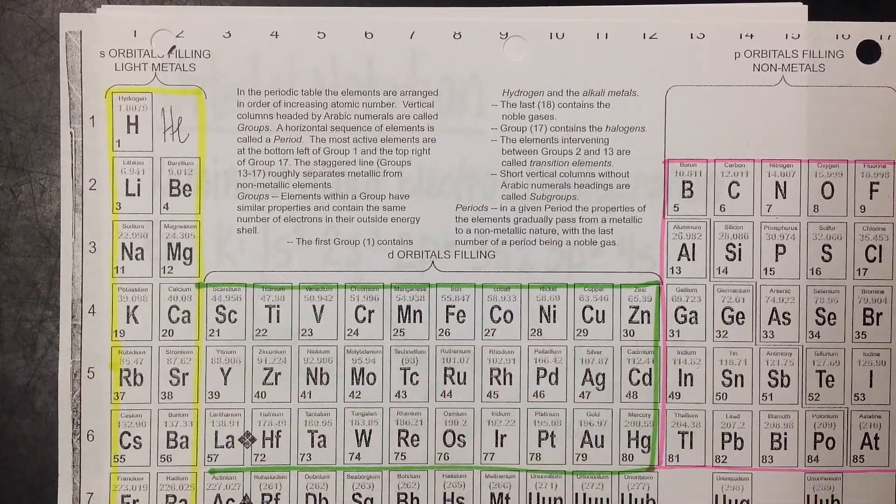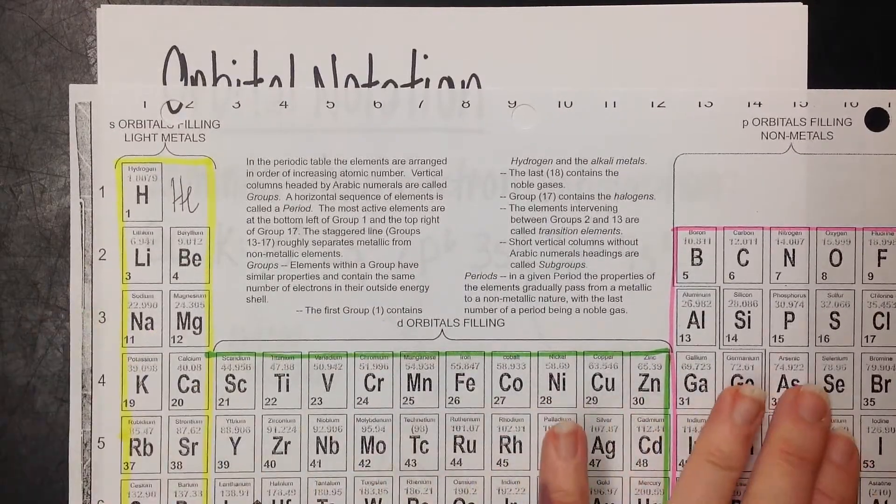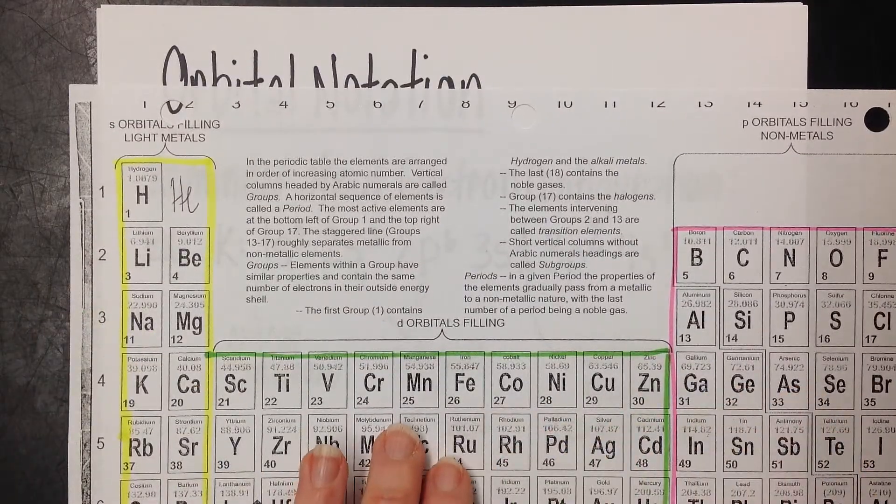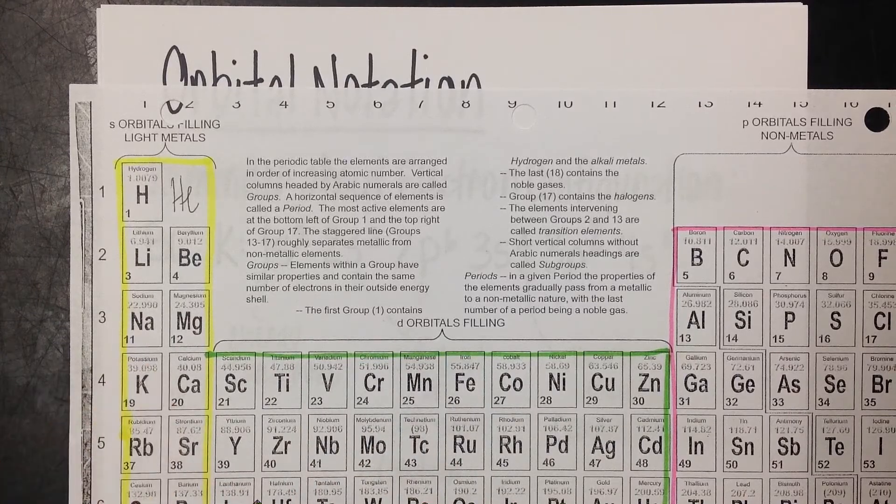The periodic table is divided into, in our case, three sections. There are more, but we're mostly looking at s, p and d. And you can see we ended up on 4s1, which is our location for potassium.